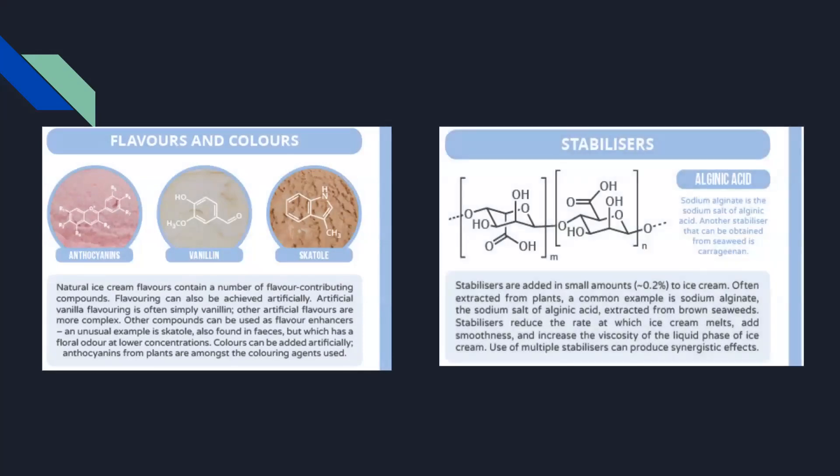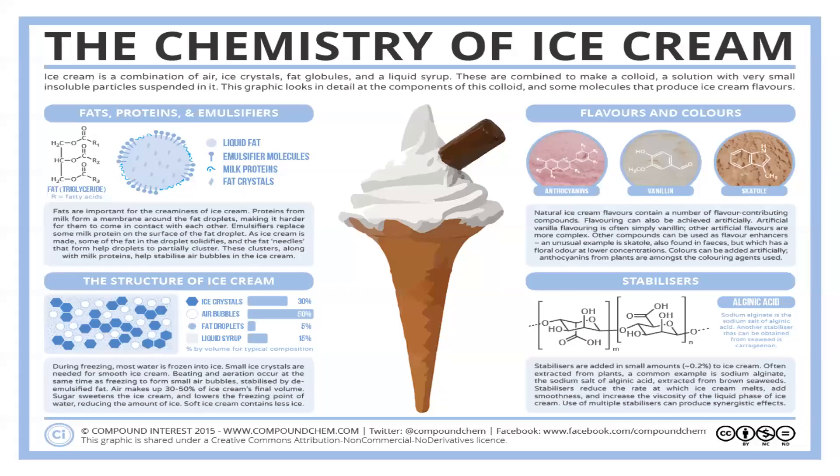The other two main components are flavors and colors, and then stabilizers. Ice cream can have a very wide array of flavors, ranging from natural flavors to man-made products and flavor enhancers that affect taste and texture. Stabilizers are more common in mass-produced ice cream and prevent breakdown so it has a longer shelf life. These stabilizers are typically derived from plant materials, including seaweed and fungi. When you combine all of these components together, you get a complete picture of what goes into ice cream.